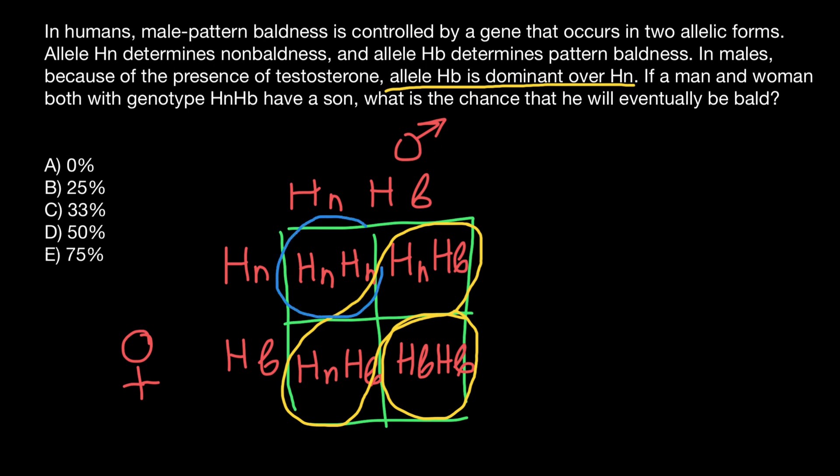So according to this Punnett square, only one quarter of the progeny of this couple would have normal hair, and three quarters will have male pattern baldness. So three quarters of the males, and this is answer E.